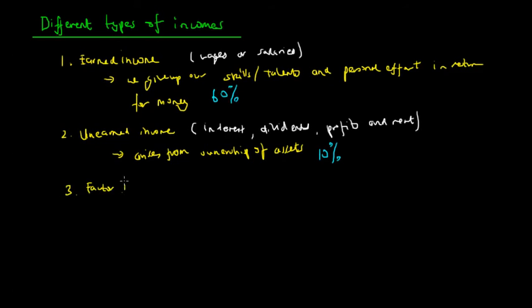Thirdly, we have factor incomes. Factor incomes relates back to this idea of unearned income or earned income, and it represents incomes gained by those taking part in production or selling resources. So factor of production comes from that it is income earned from taking part in the sale of resources.